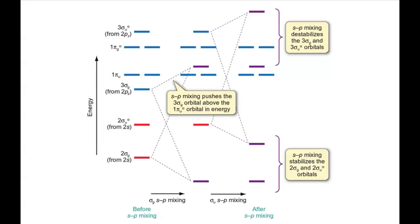For O2 and F2, you are able to ignore SP mixing, as it's relatively unimportant. The degree of SP mixing depends on the energy gap between the S and P orbitals, and the greater the energy gap, the smaller the interaction.